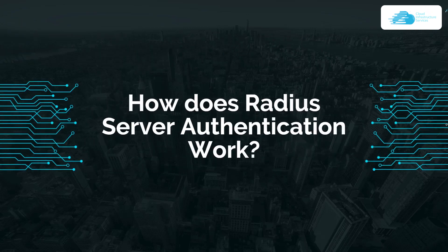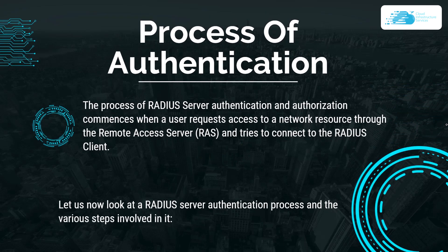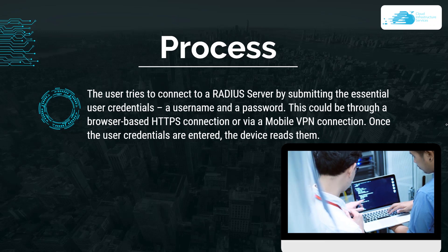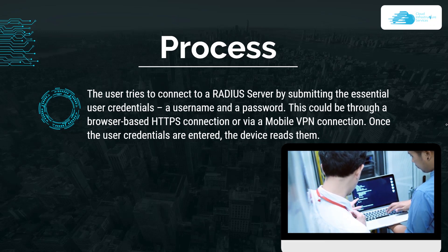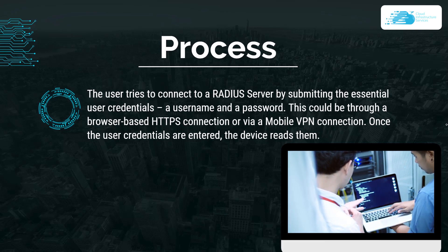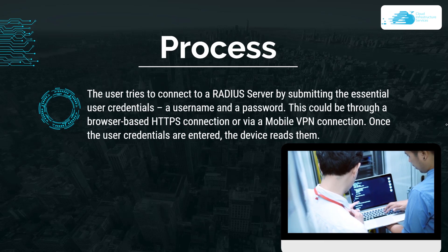The process of RADIUS server authentication and authorization commences when a user requests access to a network resource through the Remote Access Server (RAS) and tries to connect to the RADIUS client. The user tries to connect by submitting their credentials, which can be done through a browser-based HTTPS connection or via a mobile VPN connection. Once the user credentials are entered, the device reads them.